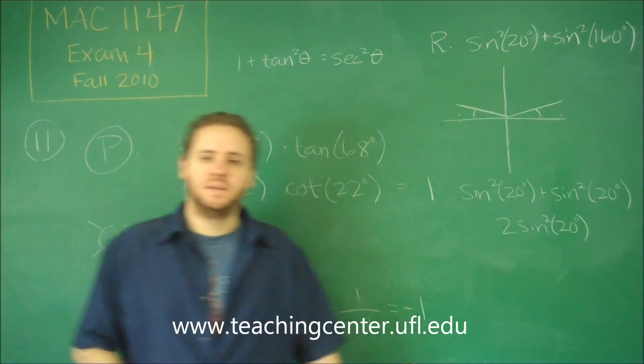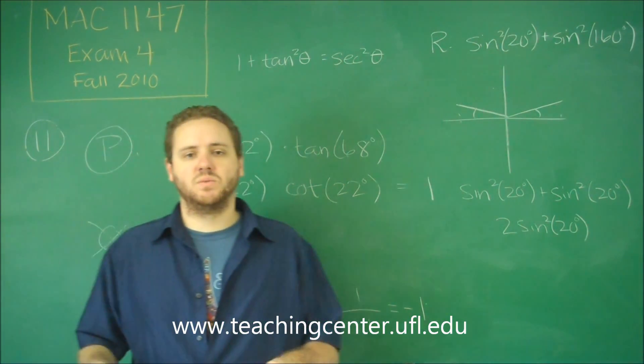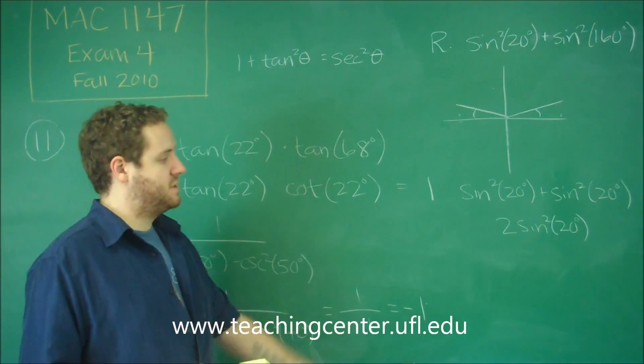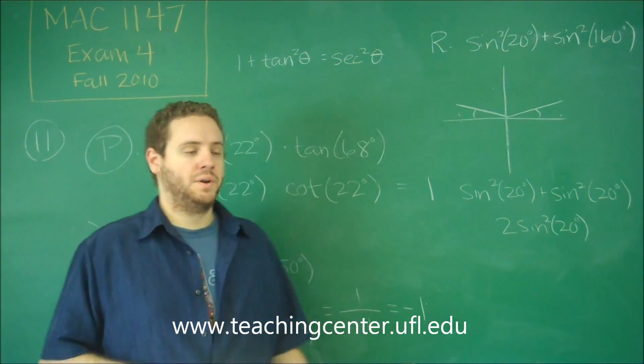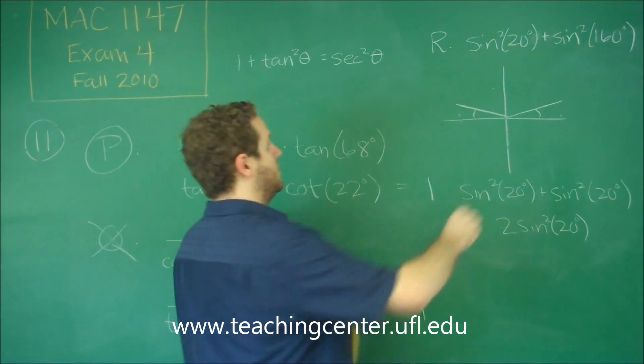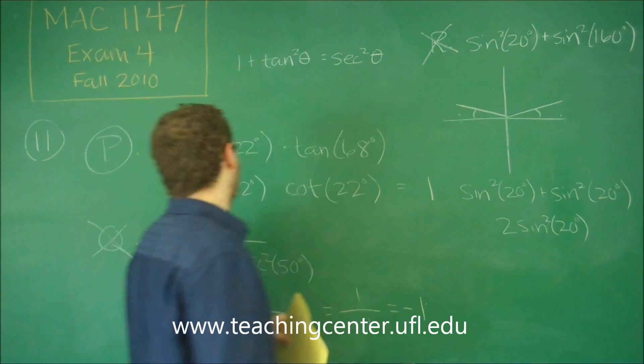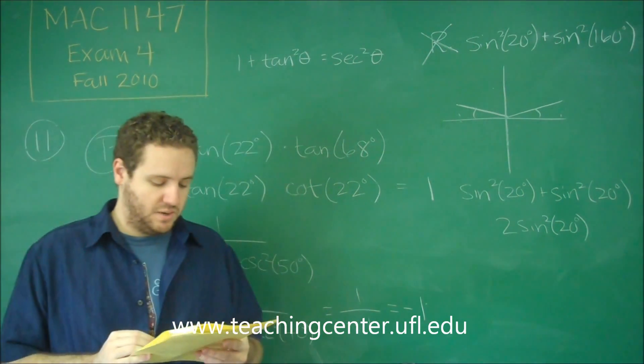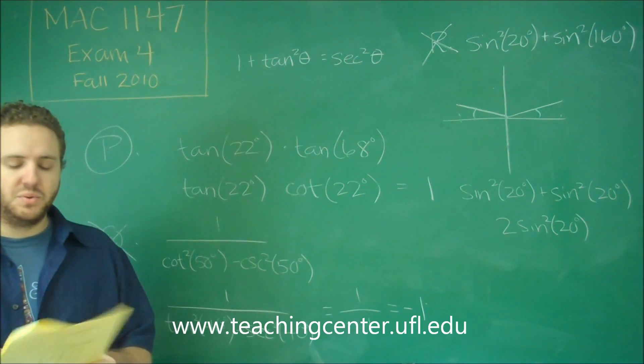And sine of 20 degrees is going to be some weird decimal, some irrational number. And when you square that and times 2, you're definitely not going to get 1. And that's the only thing we were concerned about, is this equal to 1 or not. So this is not equal to 1 either. So we got that only statement P was equal to 1. So that's answer choice A.